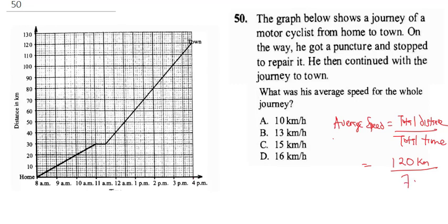This is seven hours, seven hours thirty minutes, which is 7.5 hours. So if you do 120 divided by 7.5 you get 16 kilometers per hour. The correct answer is D.